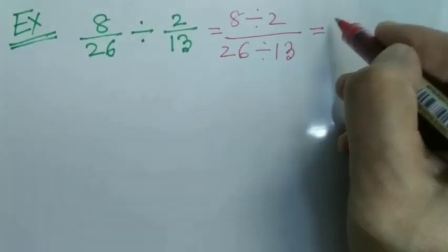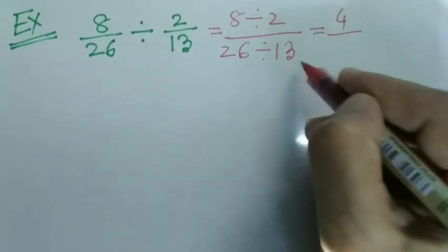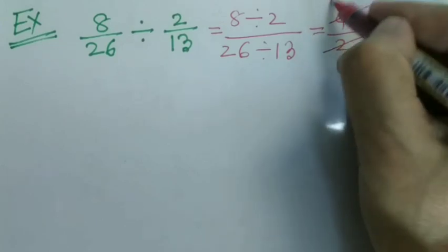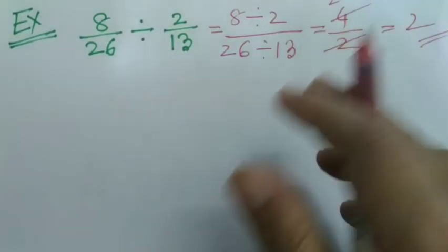This is equal to 8 divided by 2 divided by 26 divided by 13. This is equal to 8 divided by 2 means 4, 2 4s are 8 and 13 2s are 26. We can cancel out also to get 2. This is the answer.